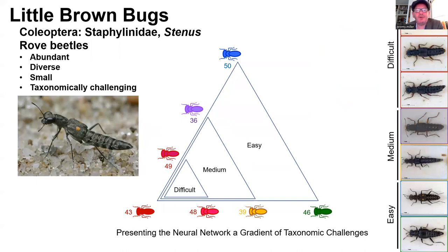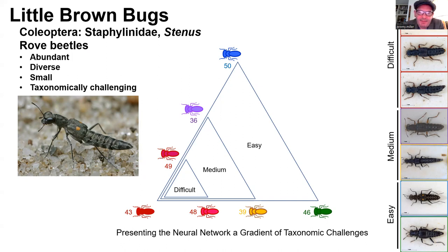To explore this question, I've been experimenting with data covering a handful of different taxonomic groups. I want to focus on the Staphylinid beetle genus Stenus. These are typical examples of little brown bugs — abundant, diverse, small, taxonomically challenging. We selected seven species to represent a spectrum of taxonomic challenges.